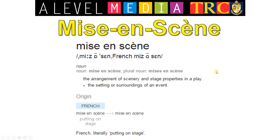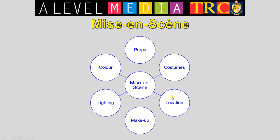Because we're talking about mise-en-scène, which is of course the arrangement of scenery and stage properties in a play — literally means putting on the stage. Obviously we're talking about everything that could be seen on screen, or in our case on a magazine cover in an image. What kind of things do you want to talk about? Props, costumes, locations, makeup, lighting and colour.